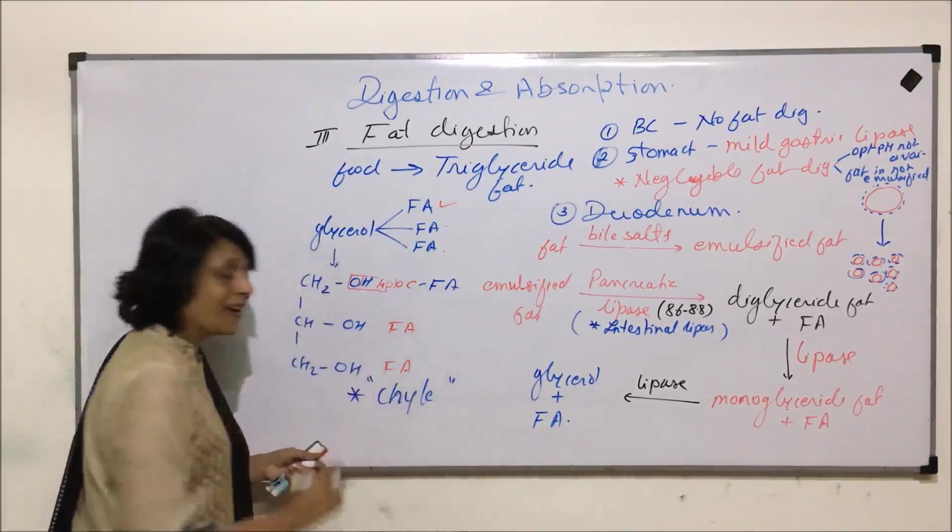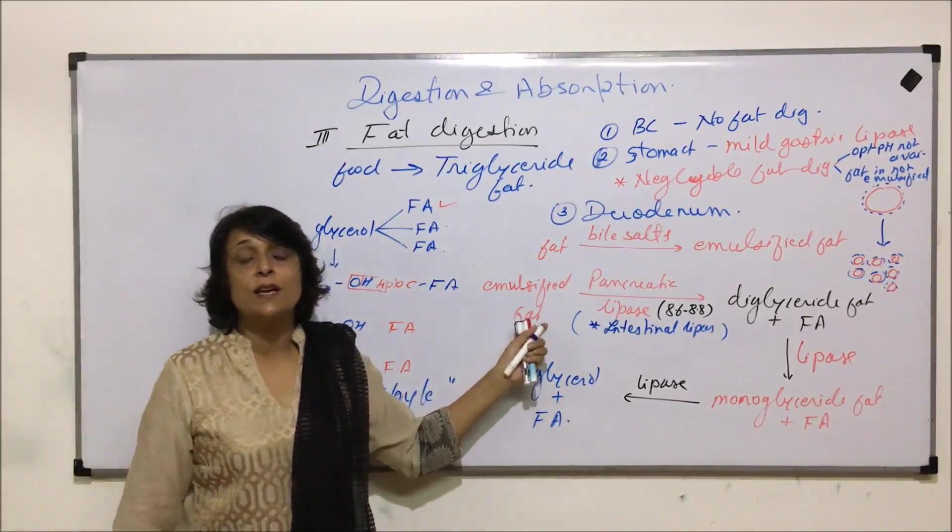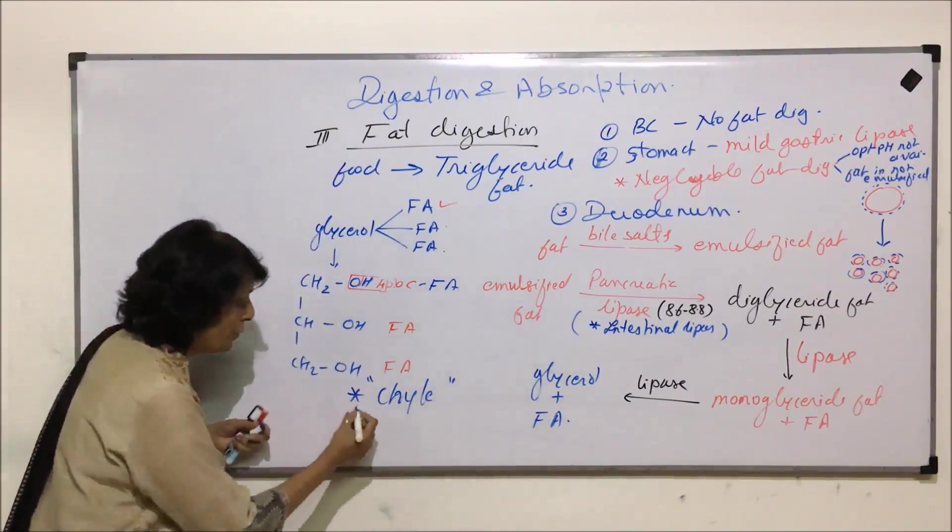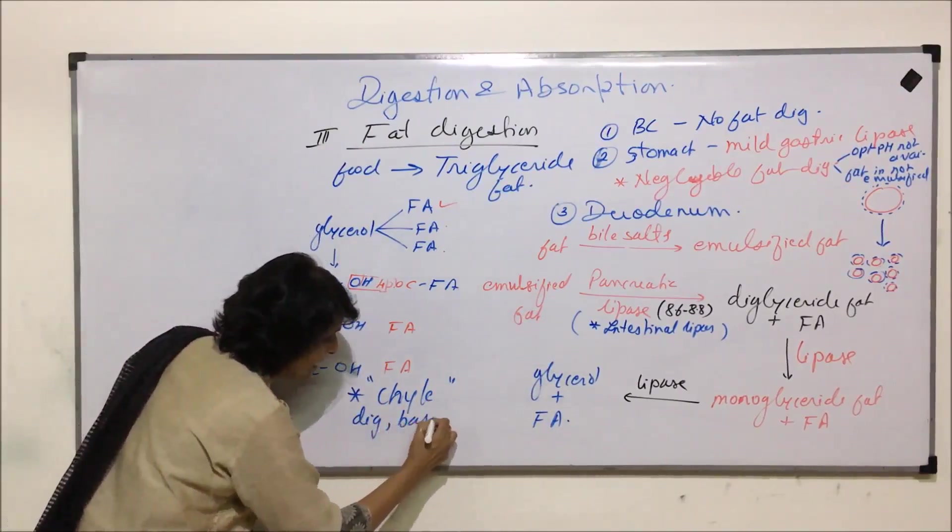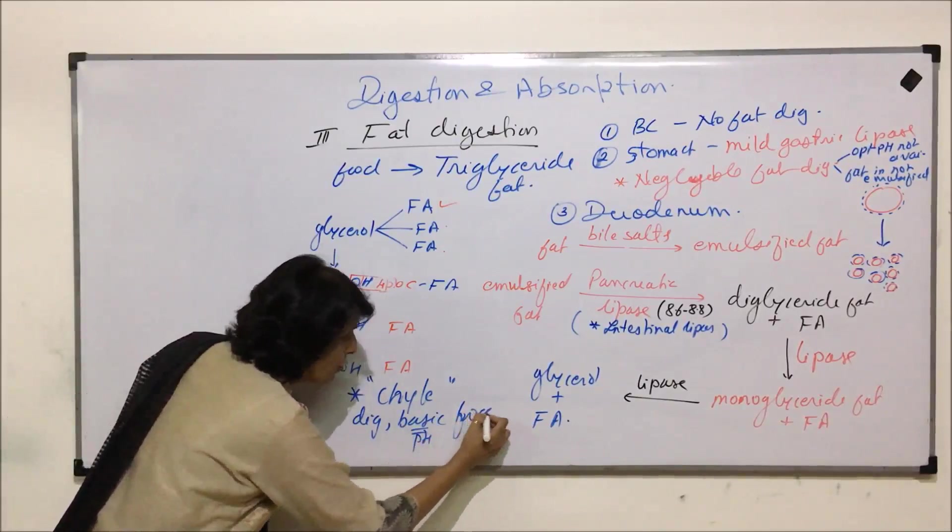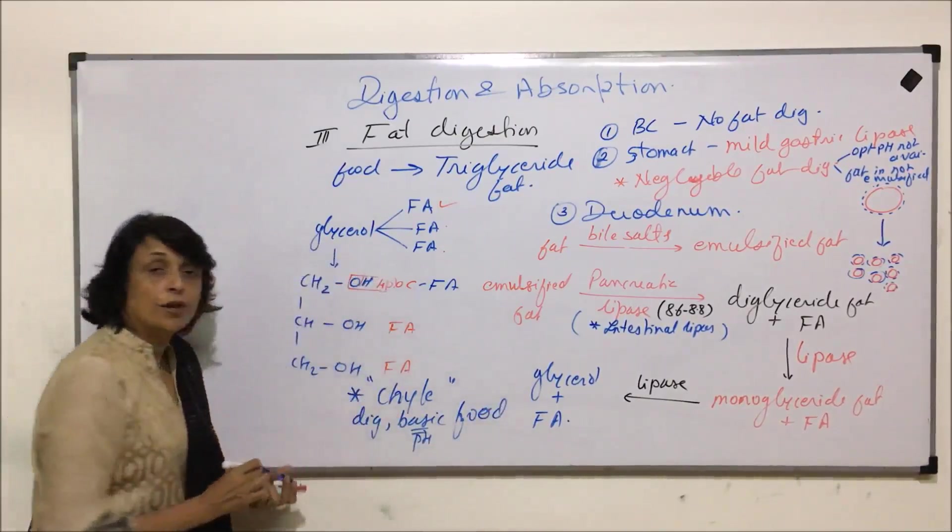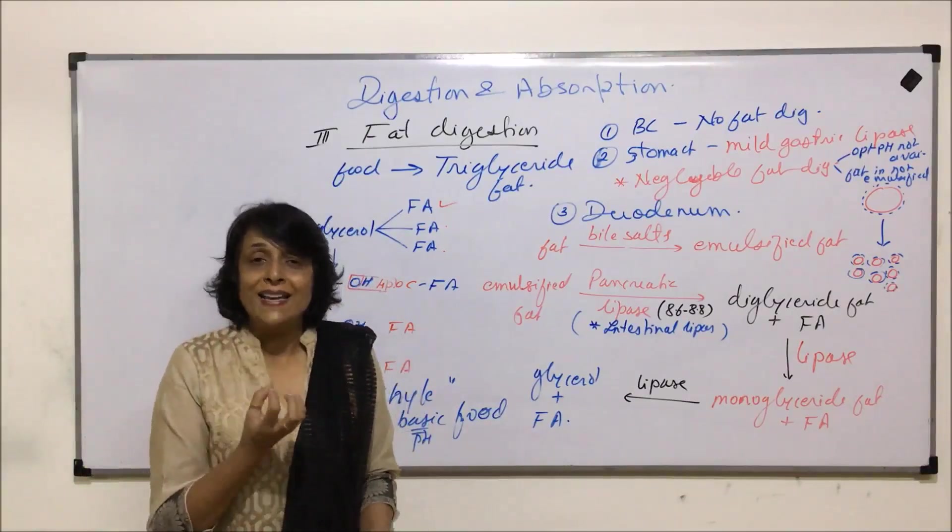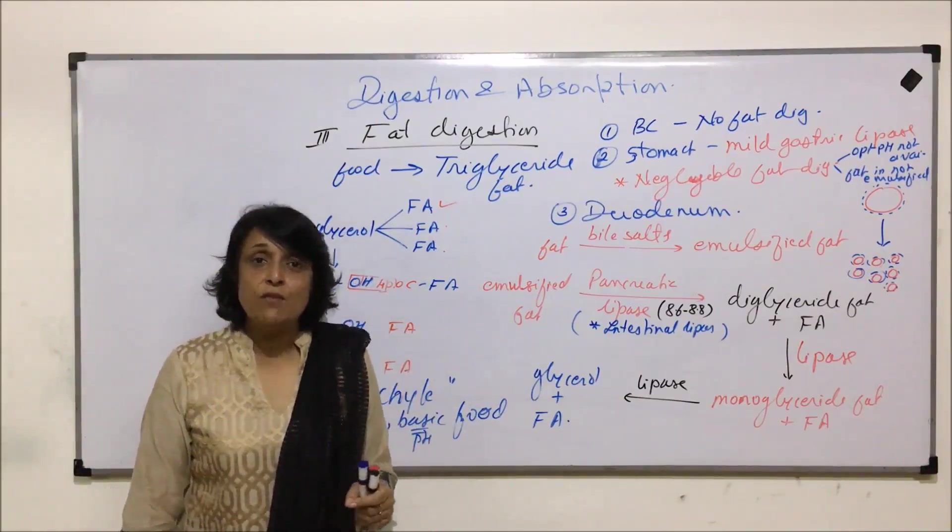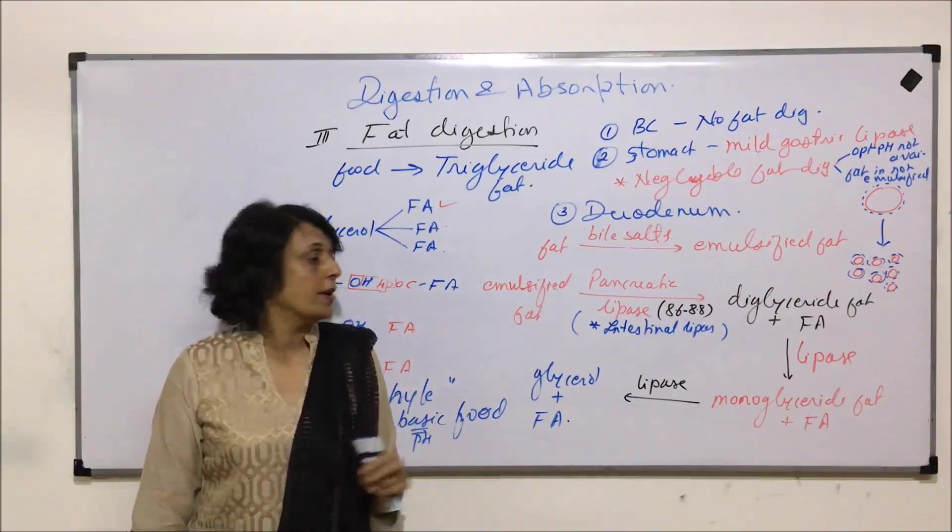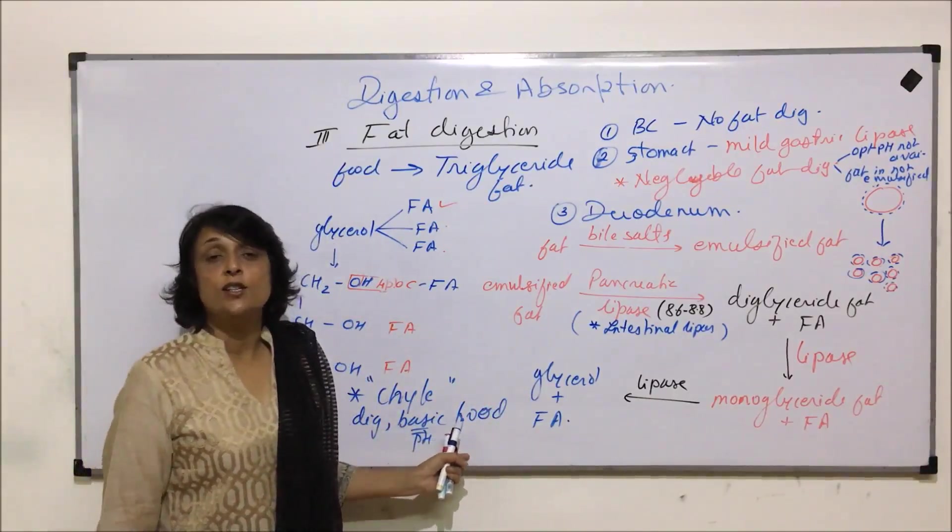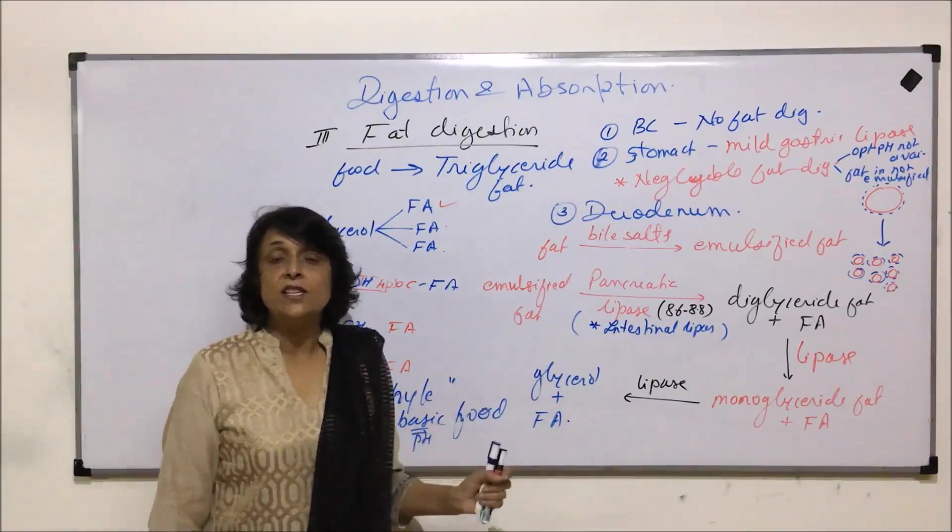After digestion is completed in duodenum, this food is completely digested and basic. So we say digested basic food, and basic here means the pH. Basic pH food is given the term chyle. Bolus is the ball-like soft food which we swallow. Chyme is partially digested acidic food which is released from the stomach and coming into the duodenum. And now this food which is digested - it is all digested material and it is basic in nature, pH is basic - such digested basic food is known as chyle.